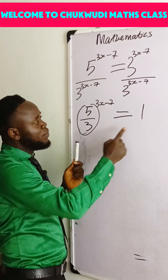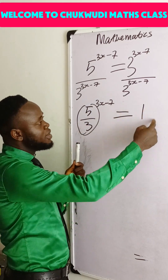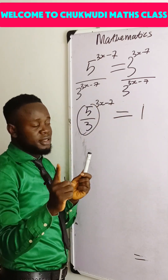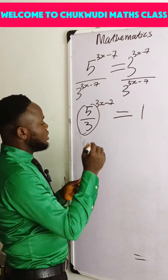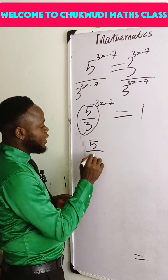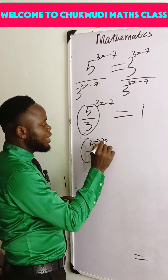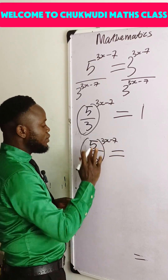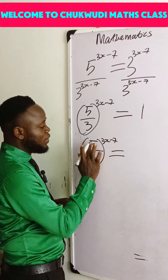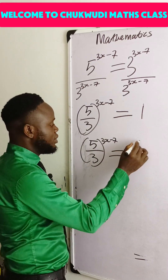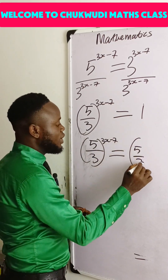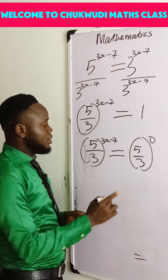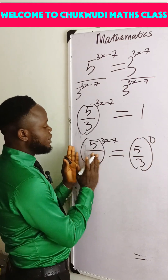When we arrive at this point, the base is now 5 over 3. If we can get the same base on both sides, we can equate the exponents. So we have 5 over 3 raised to the power 3x minus 7, equal to 5 over 3 raised to some power. Note that 5 over 3 to the power 0 gives us 1.